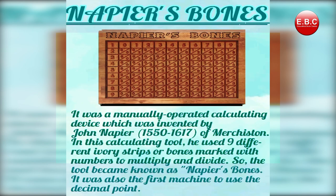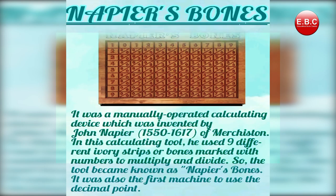Napier's Bone calculation ko easy yani aasan karne mein important device hai. Yeh tab aaya jab ek Scottish mathematician John Napier ne 1614 mein Napier's Bone ka invention kiya. Is calculating device ki help se multiply or divide kiya jata tha. Ye kuch aur nahi — bones or wood ka ek piece tha jis per numbers ko print kiya jata tha, jis per multiply or division ko easy banaya gaya.